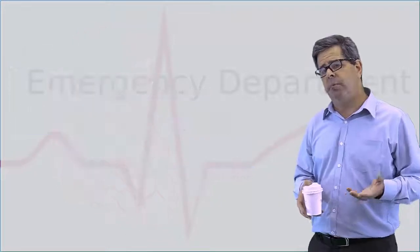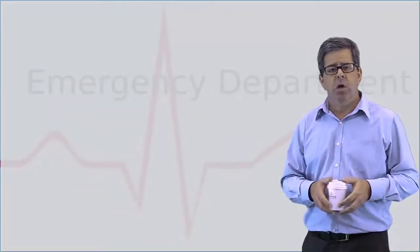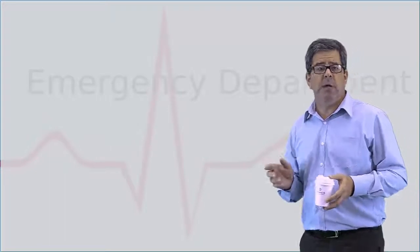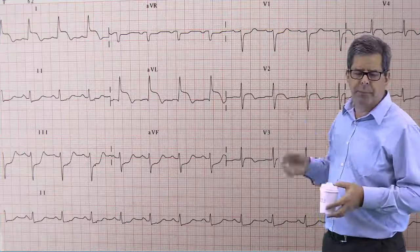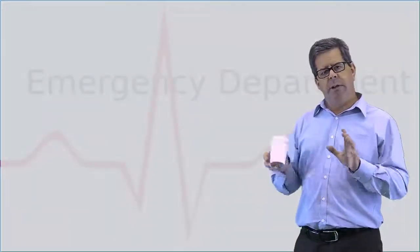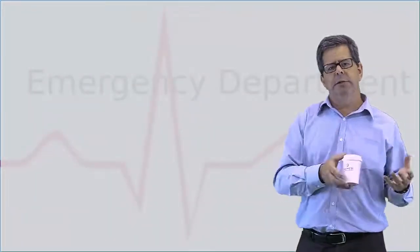You will on the ECG see something like this: ST elevation 1 AVL, the lateral leads. Okay, let's move away from the left side and we'll go and look at the right side because it presents quite a lot differently.